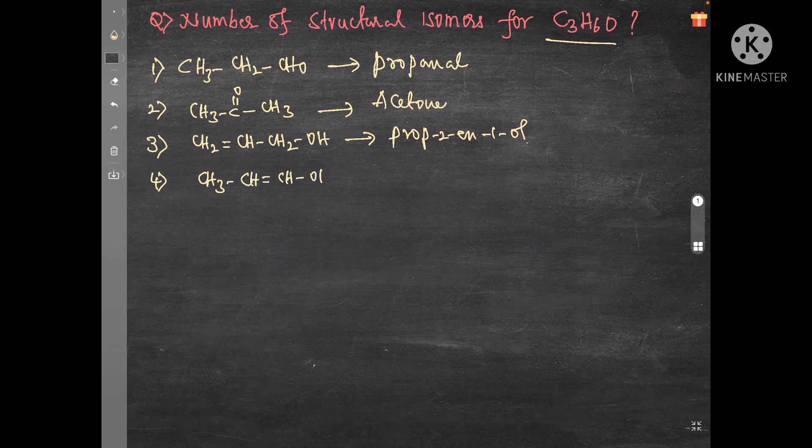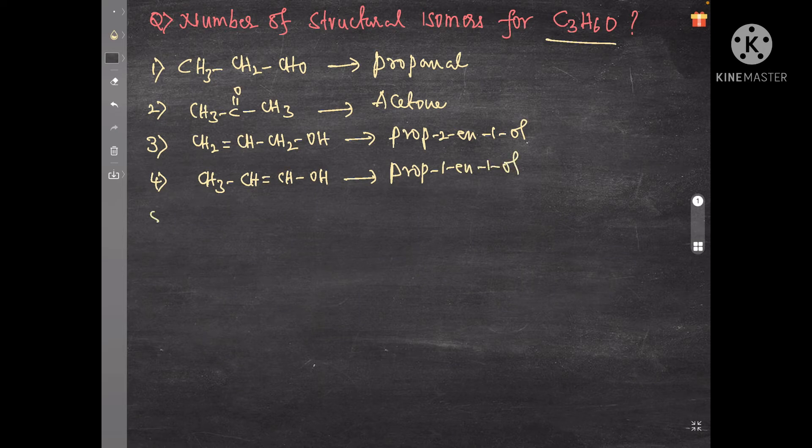Name of this compound is prop-1-en-1-ol. Fifth one is CH3-COH=CH2